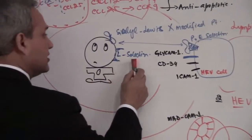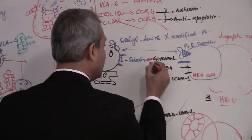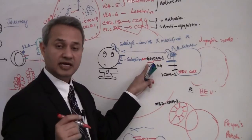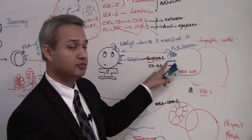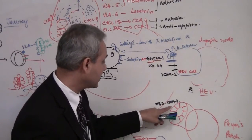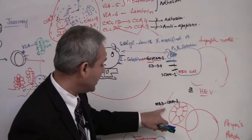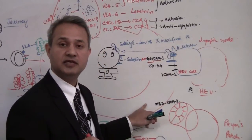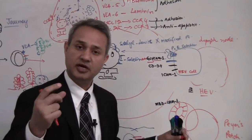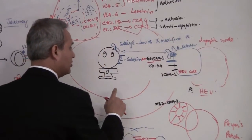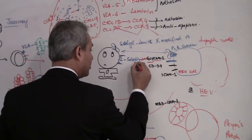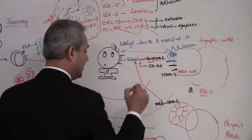L-selectin connects with glycam-1. The name glycam comes from 'glycosylated-dependent cell adhesion molecule.' MADCAM-1 stands for mucosal adhesion cell adhesion molecule — a ligand on the high endothelial venule of a Peyer's patch. So L-selectin can connect with glycam-1, CD34, or MADCAM-1.